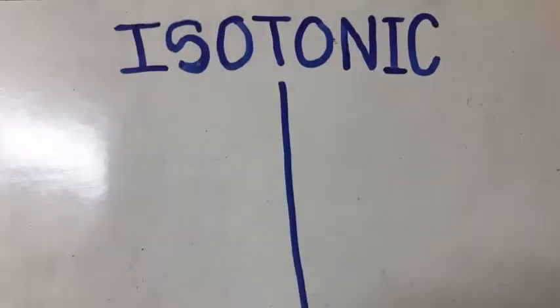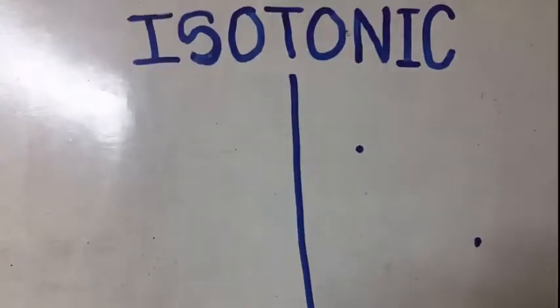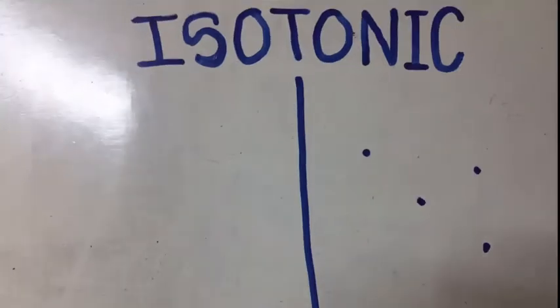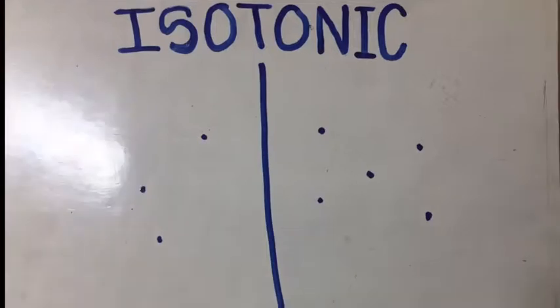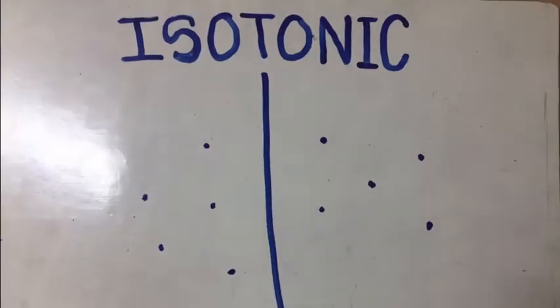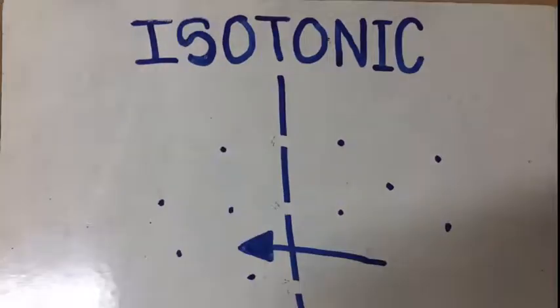Isotonic solutions are where the water is moving equally in and out of the cell. It's also where there is no gradient because the particle content dissolved in the solution is the same as the cytoplasm.